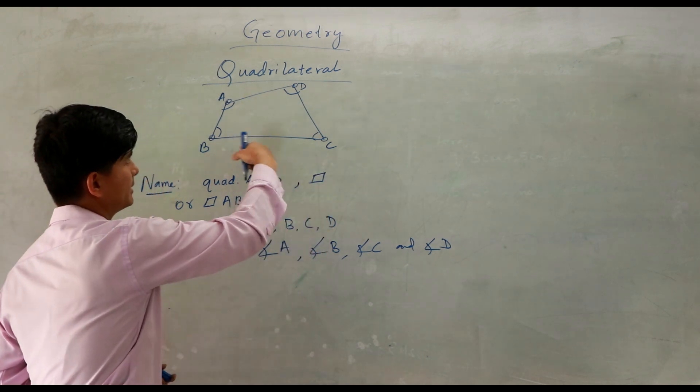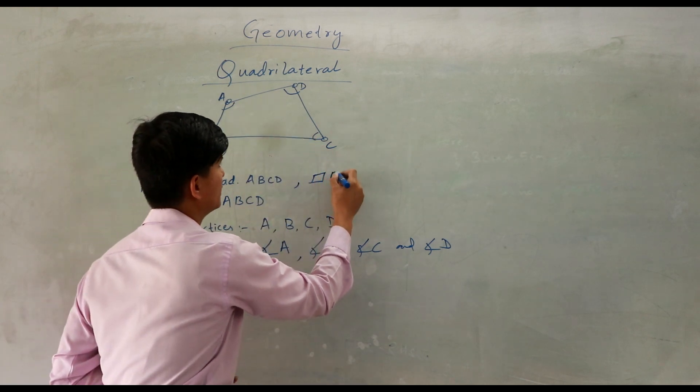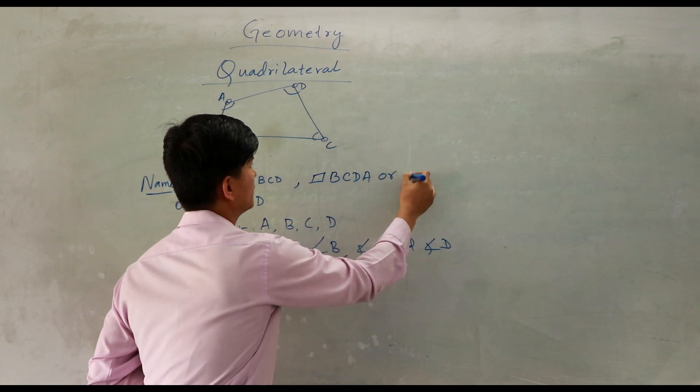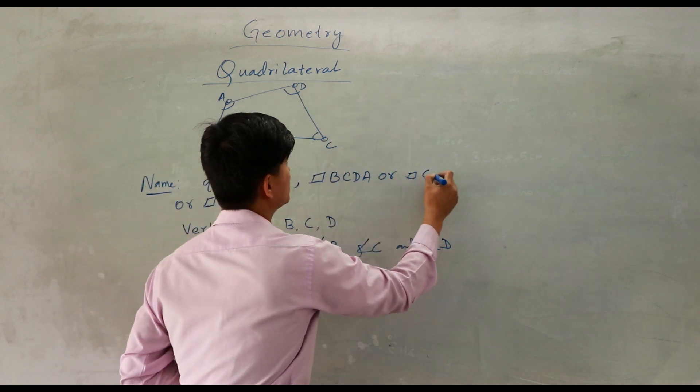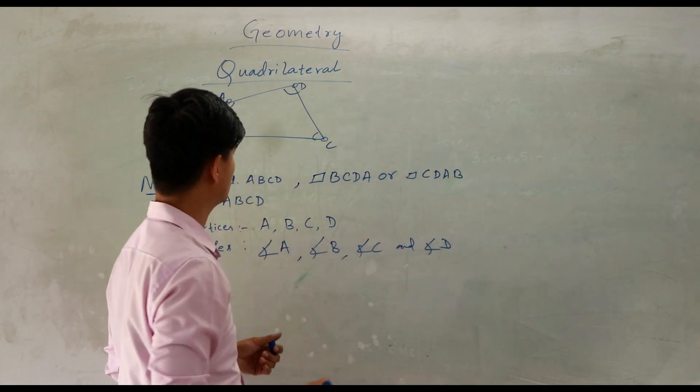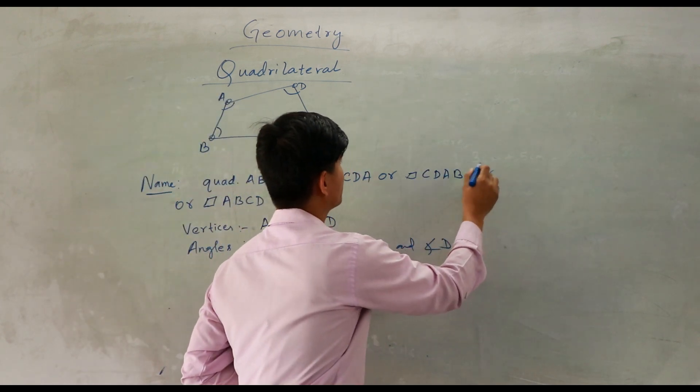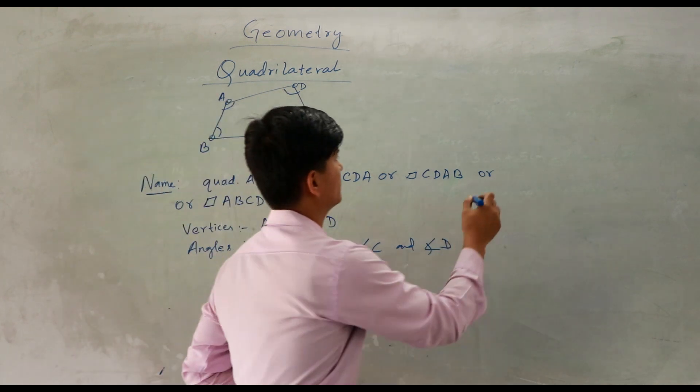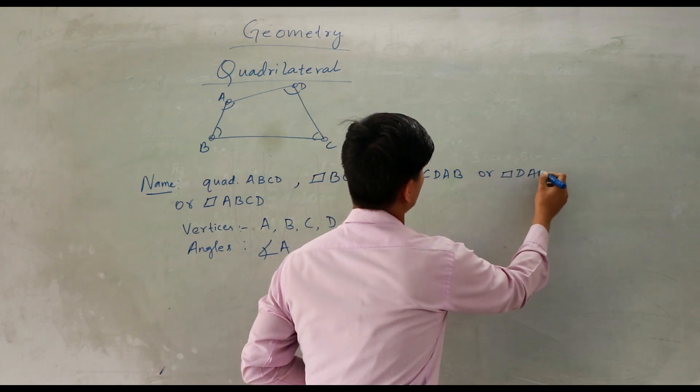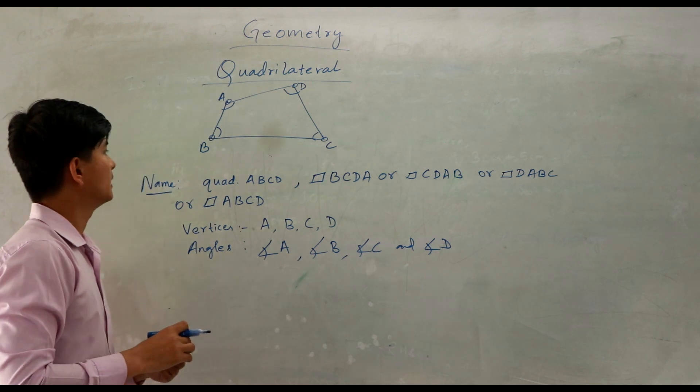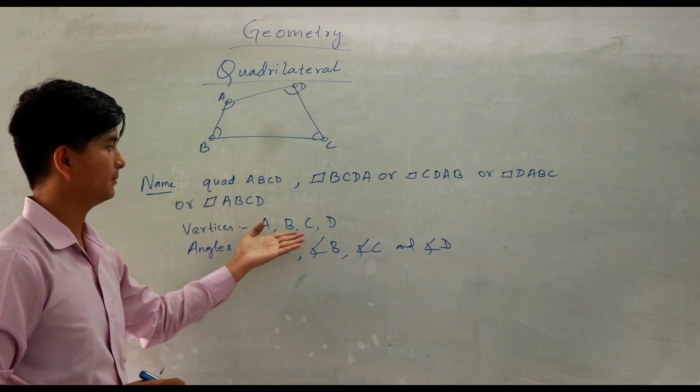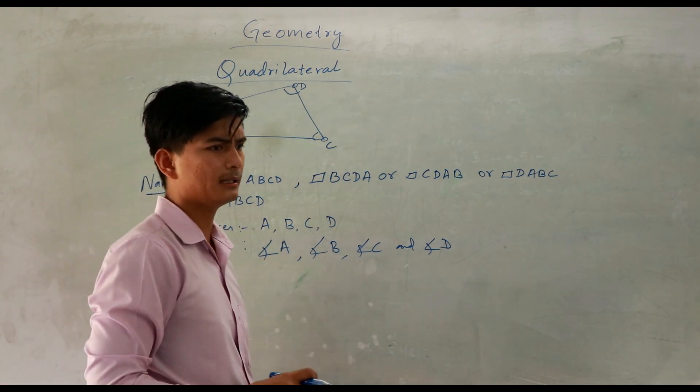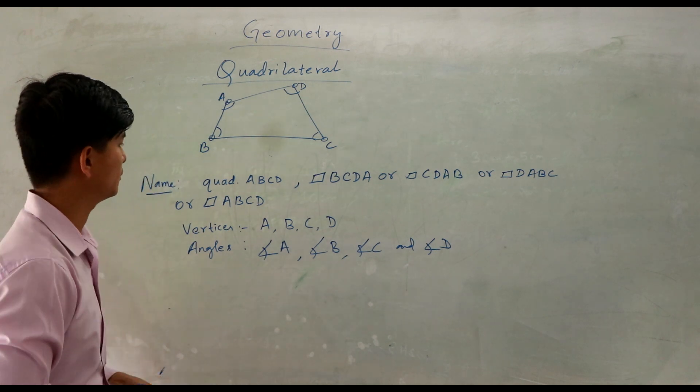Quadrilateral ABCD I have already written. So in this way you can write the name for this quadrilateral. We can write the vertices ABCD, angles are angle A, angle B, angle C, and angle D.